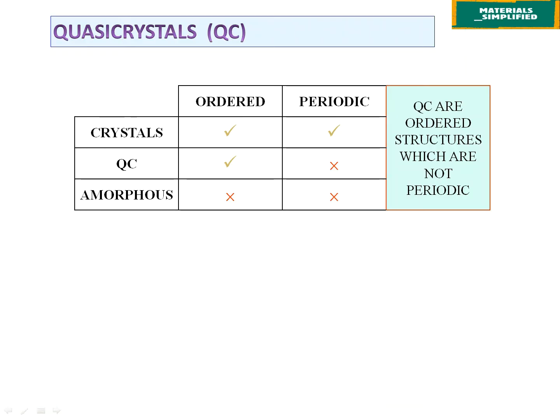To summarize: crystals are both ordered and periodic; amorphous solids lack both order and periodicity; and quasicrystals lie in the midway — they have order but lack periodicity. So quasicrystals are ordered structures which are not periodic. That's it, guys — I hope you enjoyed learning about quasicrystals. Happy learning!